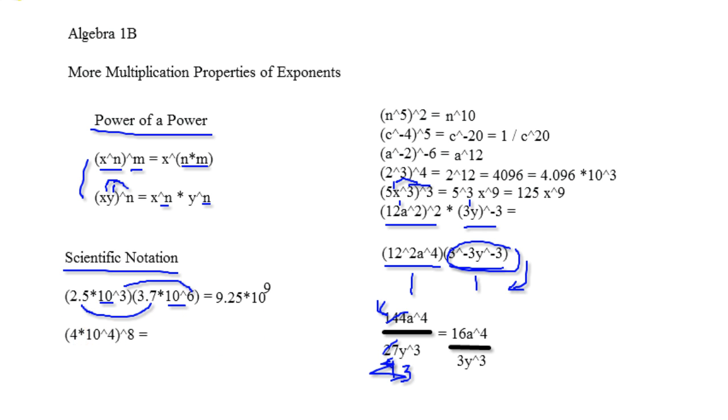Now on this one right here, what you're going to be doing is you're going to be raising not only 10 to the fourth to the eighth power, but you're going to be raising this 4 to the same power because you're going to be distributing the 8 exponent. It's the same rule as what we did up here with the power of a power rule. So this becomes 4 to the eighth times 10 to the 32nd. There we go.